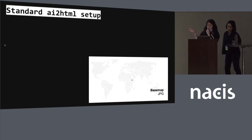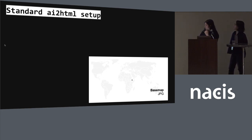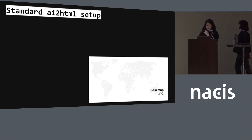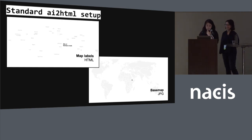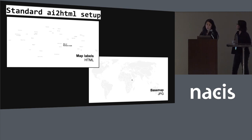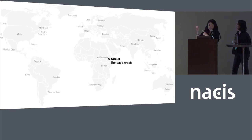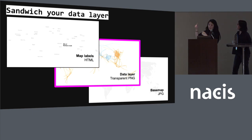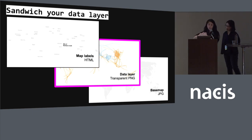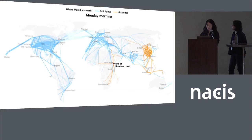We set up a base map for this project — a really simple base map of the world. On top of that we have the map labels in HTML format, so you have a JPEG base map with HTML labels on top. Then we add our data layer in between those two, so you have your labels still on top, then your data, then the base map of the world beneath.